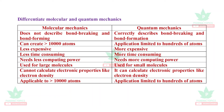Let us see the differences between molecular mechanics and quantum mechanics. Molecular mechanics does not describe bond breaking or bond formation, whereas quantum mechanics describes bond formation and bond breaking. Molecular mechanics is less expensive and less time consuming — it is very fast and can handle greater than 10,000 atoms. Quantum mechanics is more expensive and more time consuming.